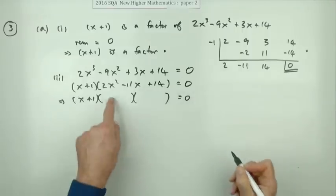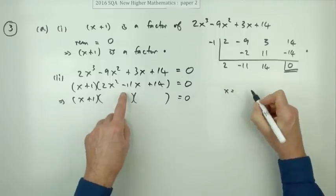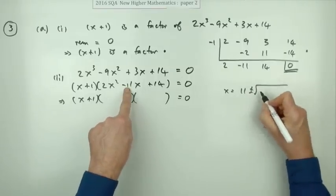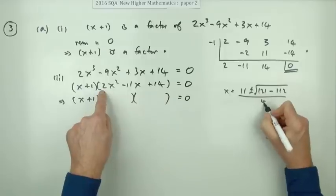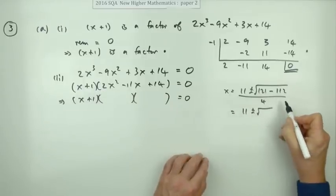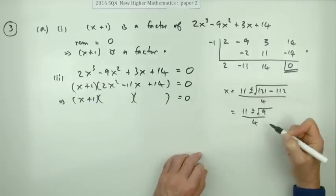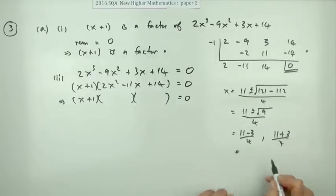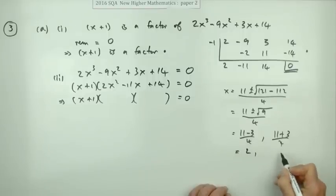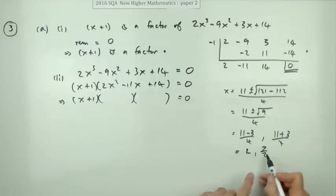Then factorize the quadratic — or use the quadratic formula if you can't factor it. The formula gives x equals 11 plus or minus the square root of 11 squared minus four times two times 14, all over four. That simplifies to 11 plus or minus the square root of 121 minus 112, which is the square root of nine — a perfect square, confirming the quadratic factorizes. The two solutions from the formula are 8 over 4, which is 2, and 14 over 4, which is 7 over 2.